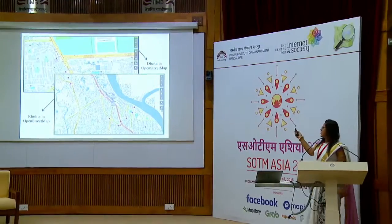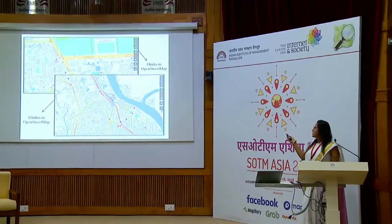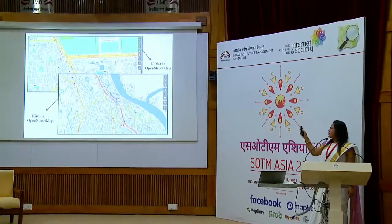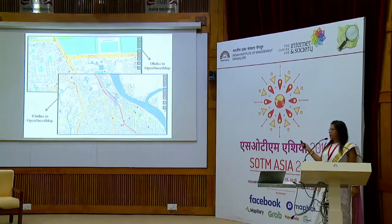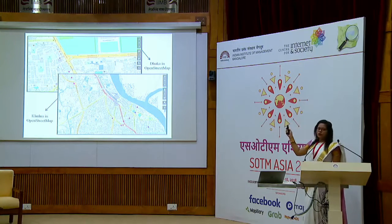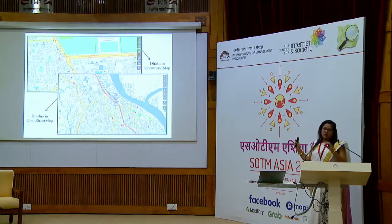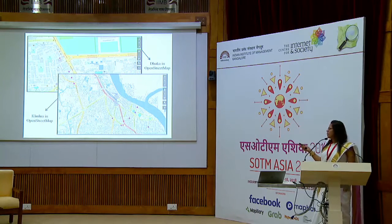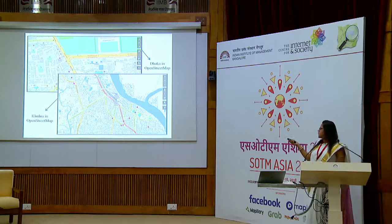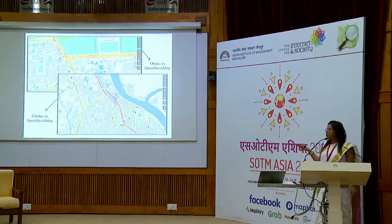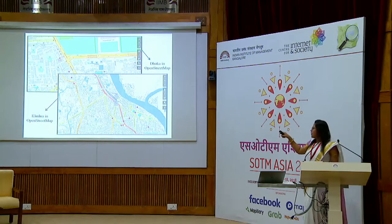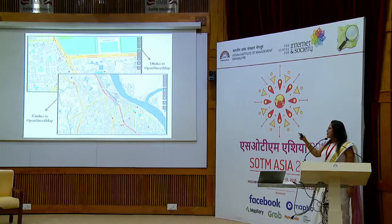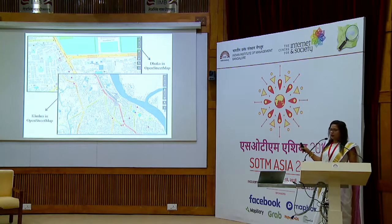You can see from the map that there is some Hindi indication alongside some English. Some states are identified by Hindi. Here is a map showing Dhaka and Khulna in OpenStreetMap. In Dhaka, we can see some Bengali indication for roads, something like Manikmi Avenue — you can see the Bengali script here.